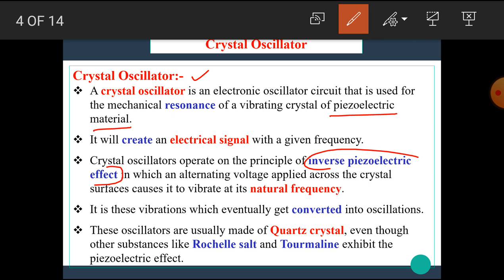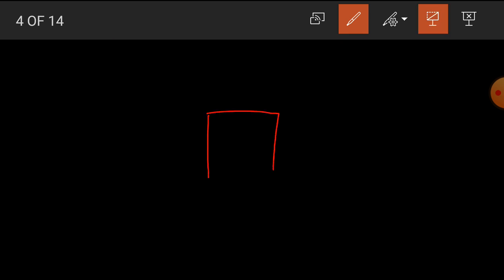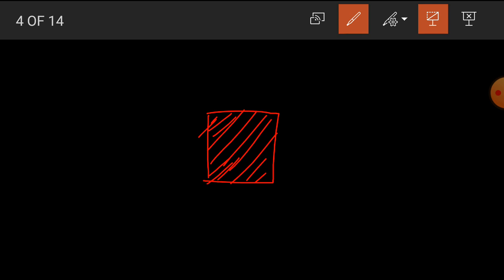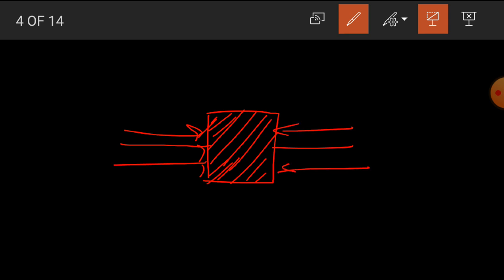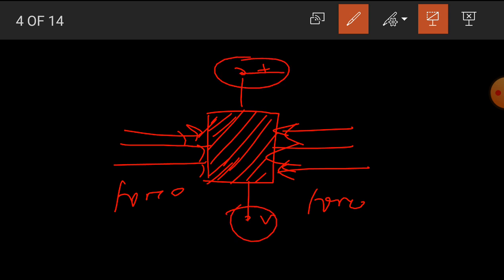First of all, we have to know what is meant by the piezoelectric effect. Consider a piezoelectric crystal here. The piezoelectric crystal is generally made up of materials like tourmaline, quartz, or Rochelle salt. If we apply a mechanical force or pressure between the two faces of this piezoelectric crystal, then the electrical potential will develop across its two terminals. That means, if we apply force in that direction, the electrical potential will be developed across its opposite faces.